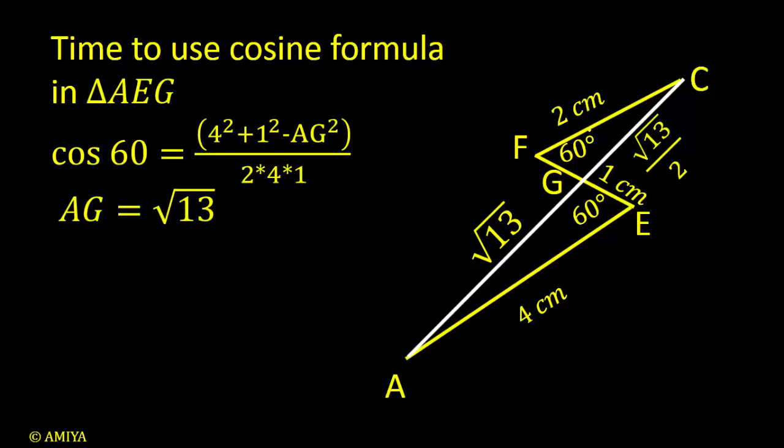Since these two are similar triangles and the ratio is 2 to 1, if this one is root 13, this would be root 13 by 2. By the same similarity, we have AG is root 13 and GC is root 13 by 2.